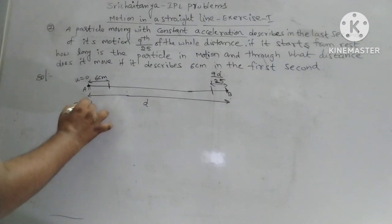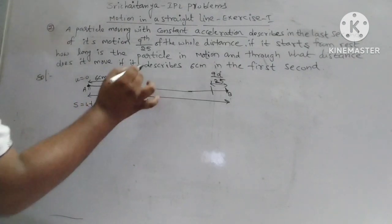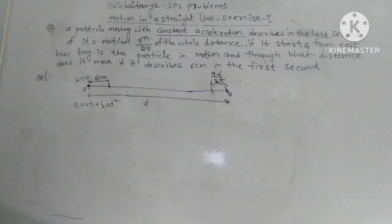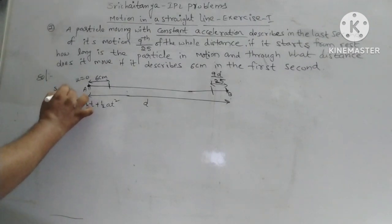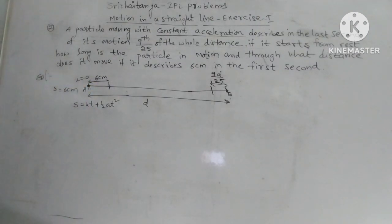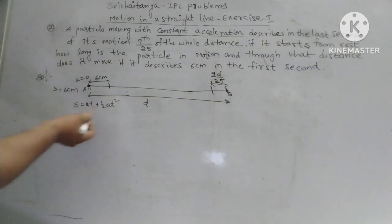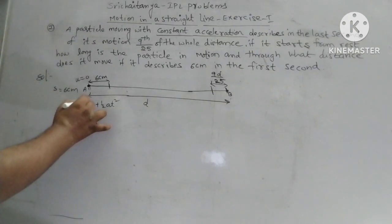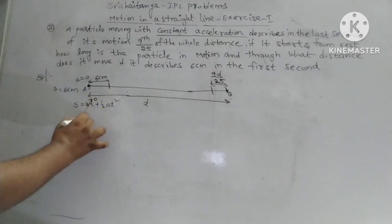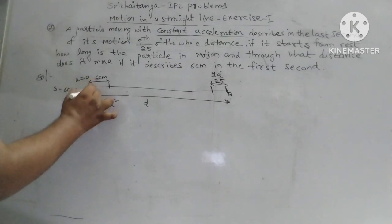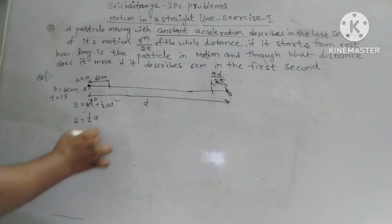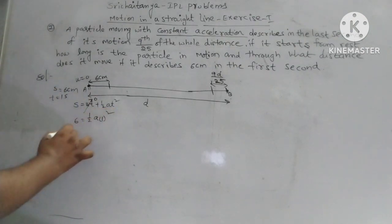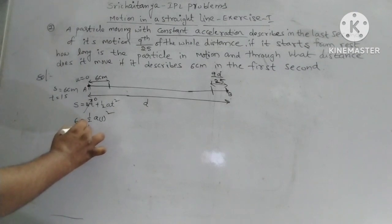Using the formula S = ut + ½at². The distance S is equal to 6 cm. Initial velocity u is 0. Time t is 1 second. So: 6 = ½ × a × (1)². Therefore 6 = ½ × a.